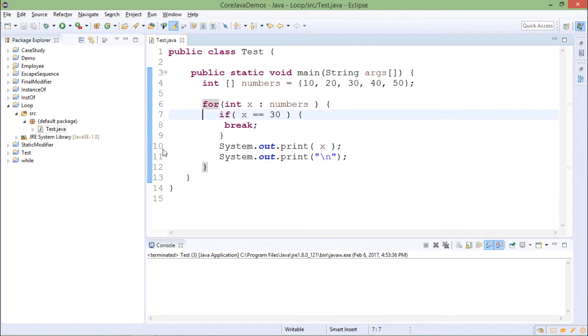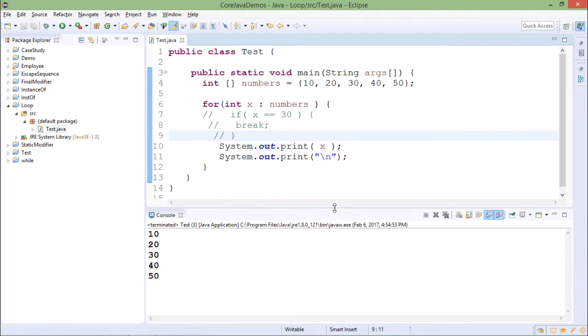Now initially I will not keep this break keyword and I will check the output. So output is 10, 20, 30, 40, 50, which is nothing but the array elements.